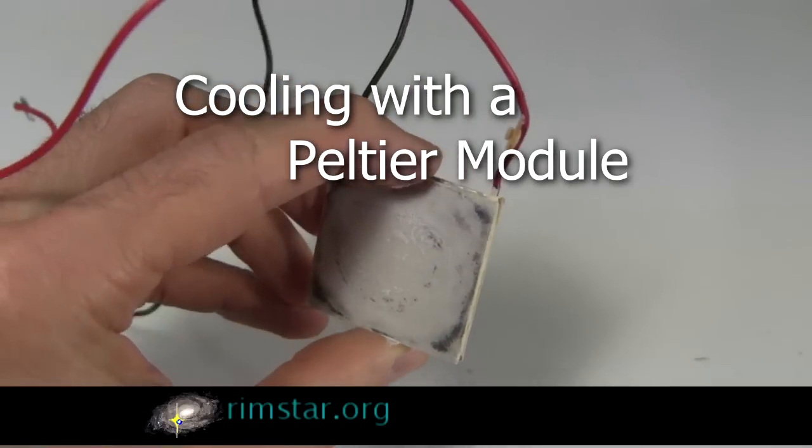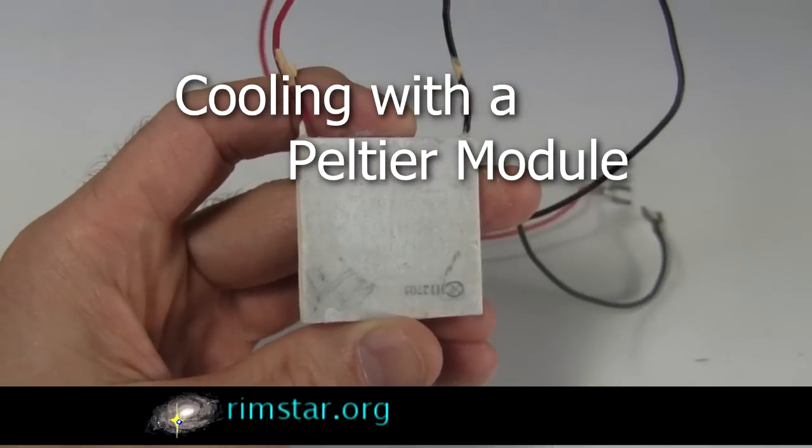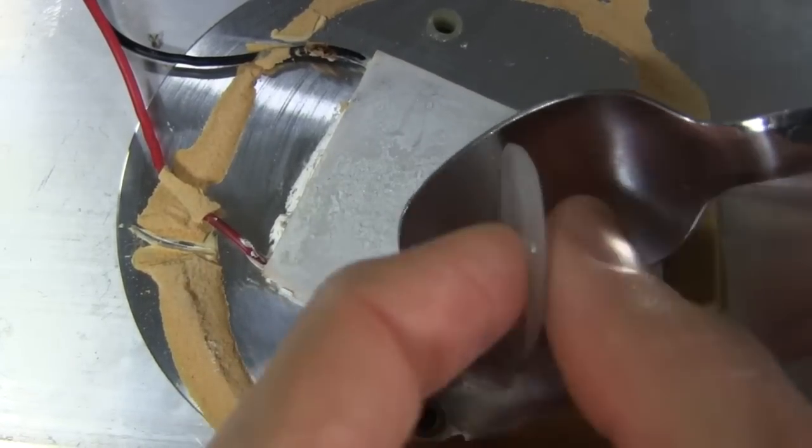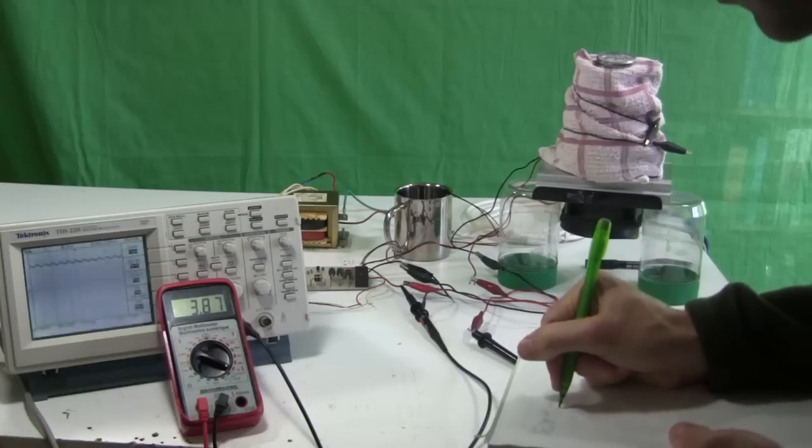Hi folks! A Peltier module can do heating and cooling without any moving parts. I'll show you how I used it to turn this water into ice. I'll also show some efficiency measurements I did.